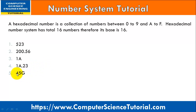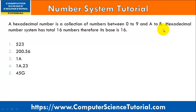However, consider 45G: 4 and 5 exist between 0 to 9, but G does not exist between A to F. Therefore, it is an invalid hexadecimal number. So, if you find any number containing a digit or alphabet outside these ranges, that number is not a hexadecimal number. In any conversion example, you must check all the digits of the number carefully before starting the conversion process.